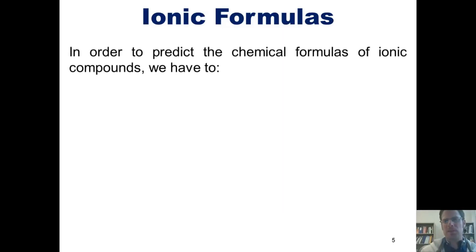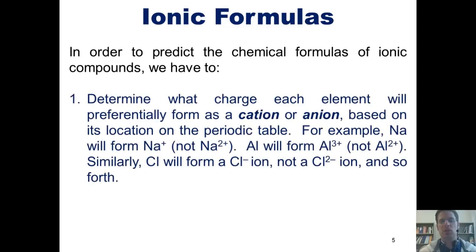In order to predict the chemical formulas of ionic compounds, we have to follow these steps. One, determine what charge each element will preferentially form as a cation or anion based on its location on the periodic table. For example, sodium will form sodium plus, not sodium two plus, because it's in column 3A of the periodic table.